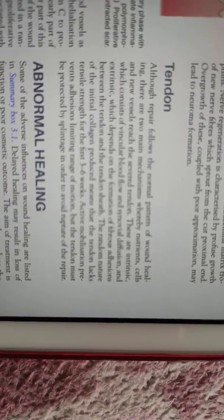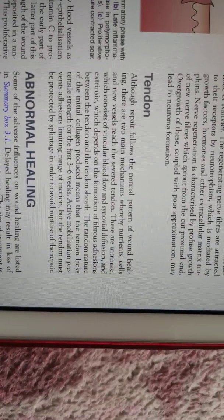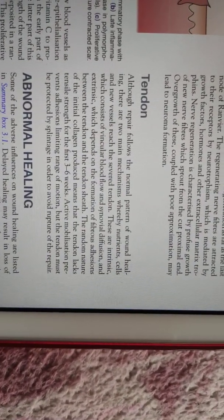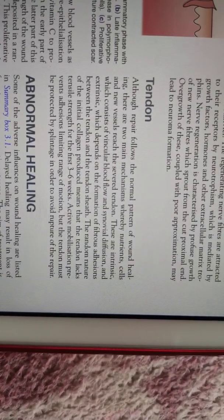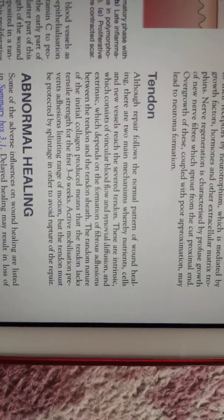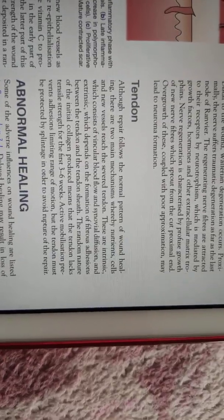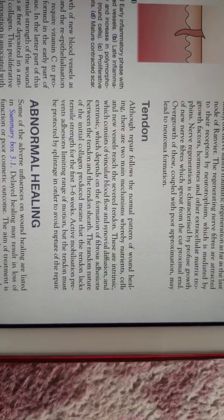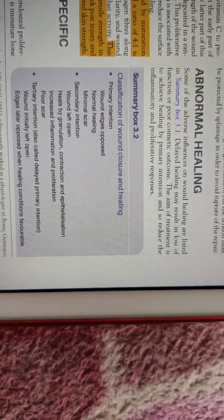In tendon, there are two types of nutrition provision: intrinsic — through vascular blood flow and synovial diffusion — and extrinsic — through the formation of fibrous adhesion between the tendon and the sheath. However, if there is too much adhesion, it may lead to contracture, so that must be avoided.